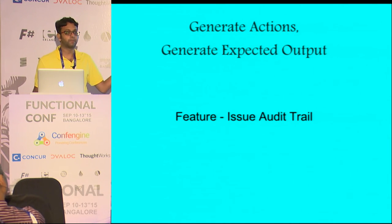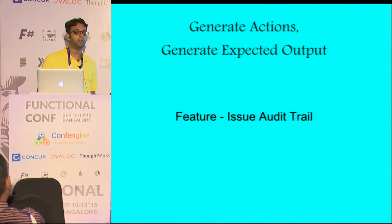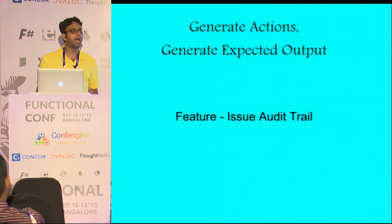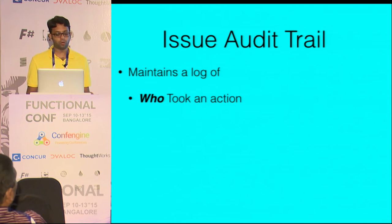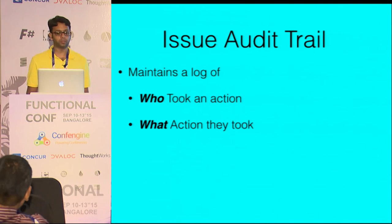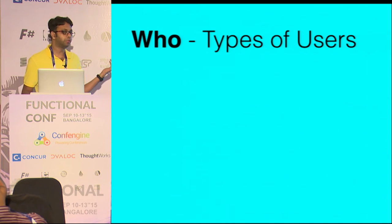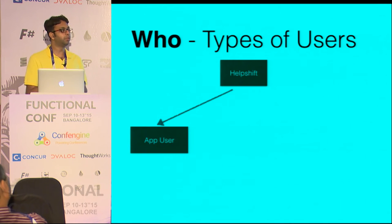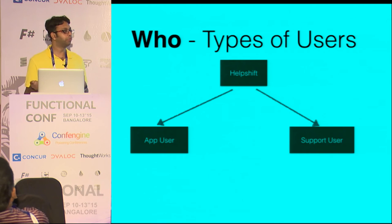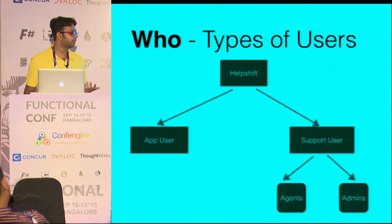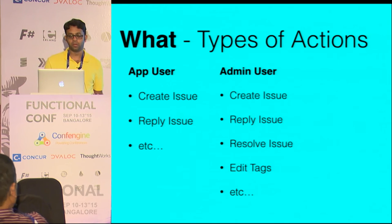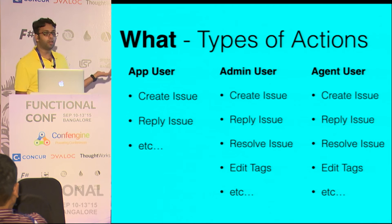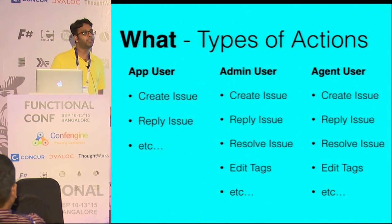Let's look at an example. We had a feature called issue audit trail. We have another feature called issues, and we wanted to log exactly what is happening — by the agents who are replying or the customers replying on that issue. It maintains a log of who took an action and what action they took. We need to understand what kind of users we have. At HelpShift we have app users — the customer using the app — then support users: agents and admins. App users can create an issue and reply to an issue; admins and agents can create issue, reply, resolve issues, edit tags, and more.